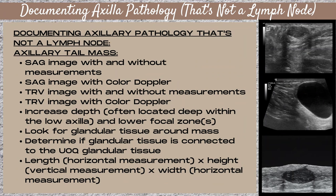To document a mass within the axillary tail tissue: take a sagittal image with and without measurements, a sagittal image with color Doppler, a transverse image with and without measurements, and a transverse image with color Doppler. Since this tissue is located deeper on the ultrasound image below the fat layer, increase your depth and lower your focal zone. Look for glandular tissue around the mass — if it's connected to the skin line it's accessory breast tissue; if it's connected to the upper outer quadrant glandular tissue, it's axillary tail tissue.